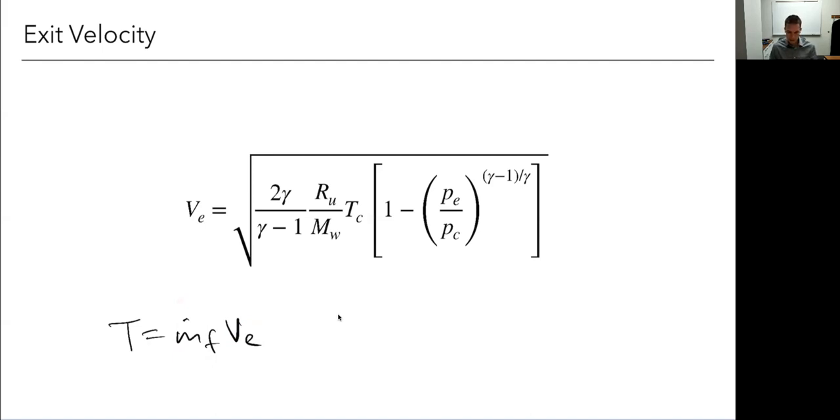So this is exit velocity. If we know what happens after combustion and we know the type of propellants we're using, we can compute our exit velocity.